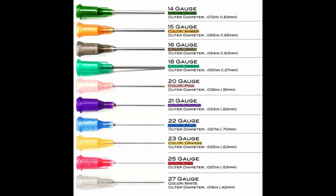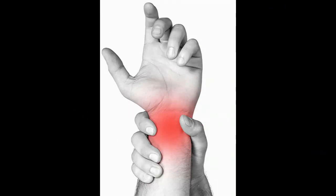La scelta dell'ago utilizzato per la puntura arteriosa determina il tempo di riempimento del campione, ma non il dolore percepito dalla persona assistita durante la procedura. Pertanto, gli studi raccomandano l'utilizzo di un ago da 23 gauge. L'utilizzo dell'ago da insulina proposto da alcuni studi necessita di ulteriori ricerche.